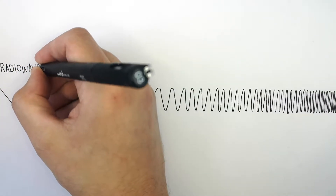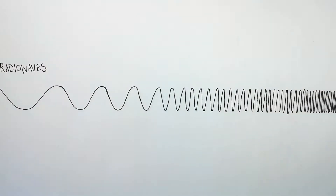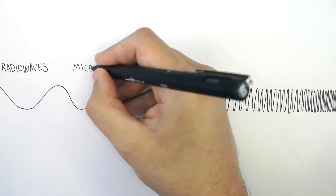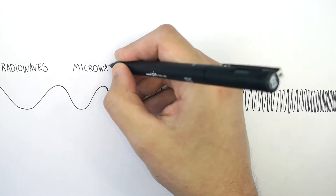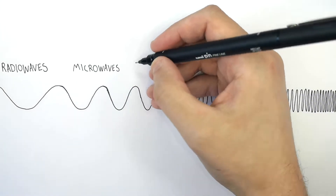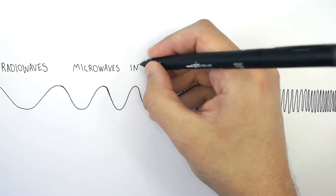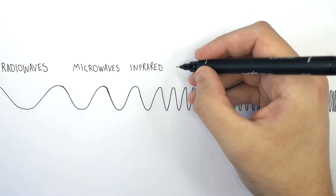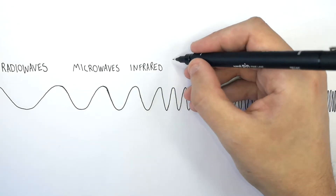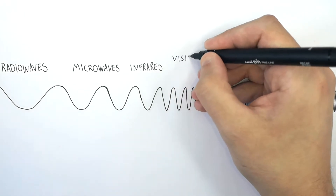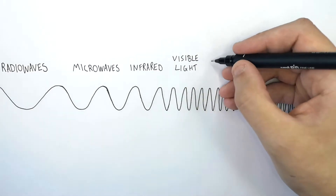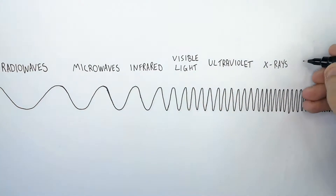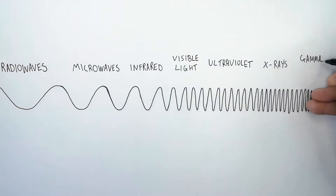The radio waves have the longest wavelengths. And as you decrease the wavelength, you're going to find microwaves. And when you decrease the wavelength even further, you're going to find the infrared waves. And as you shorten the wavelengths further, you're going to find the visible light, the ultraviolet radiation, then the x-rays, and then the gamma radiation.